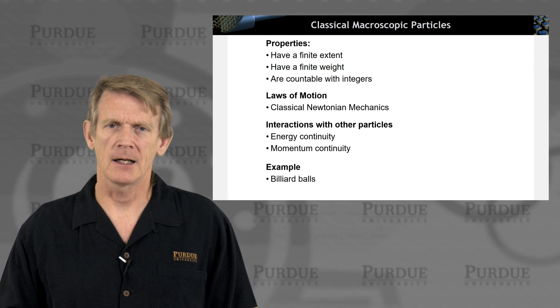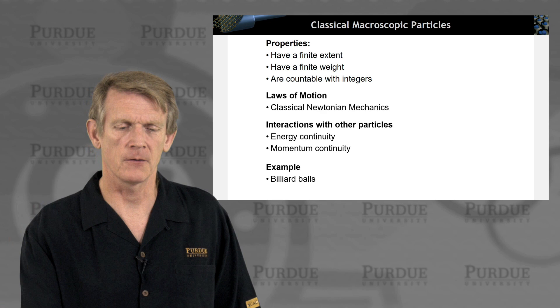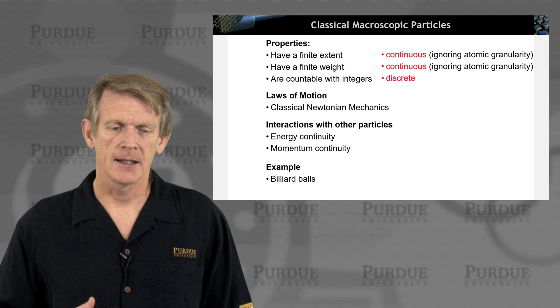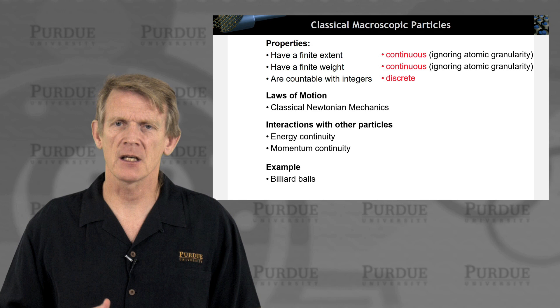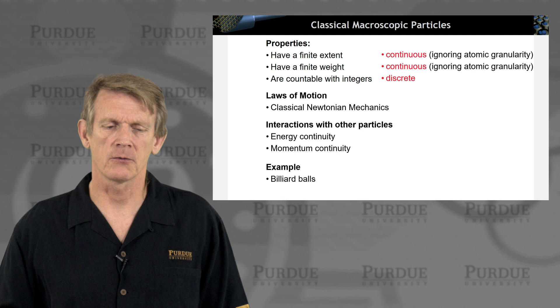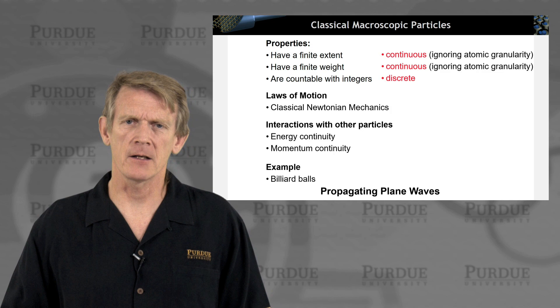Now, one example could be billiard balls, right? We have issues with energy continuity, momentum continuity. We can use them to go through any of these properties here. Now, what I like to categorize them as is that their extent is continuous, right? I mean, you can make those things of any which size you want, ignoring any atomic granularity. You can also give them any weight, and that is continuous, again, ignoring any atomic granularity. And you can count them. They're things that are discrete.